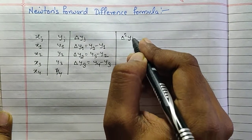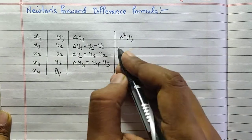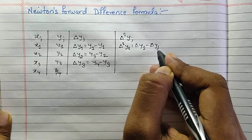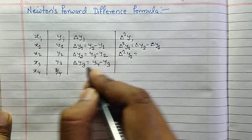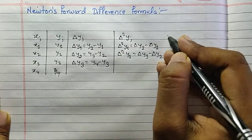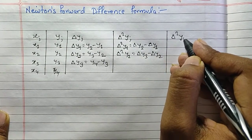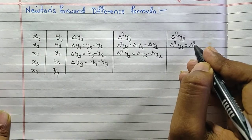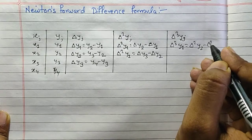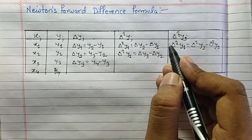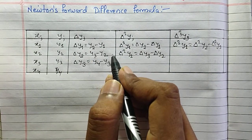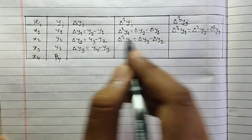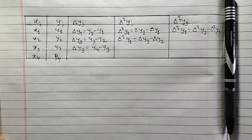Similarly, for the second-order differences: delta squared y1 equals delta y2 minus delta y1, and delta squared y2 equals delta y3 minus delta y2. For the third-order differences: delta cubed y1 equals delta squared y2 minus delta squared y1. This is the formula we will be using to find the forward differences. Now let's discuss Newton's Forward Difference Formula.